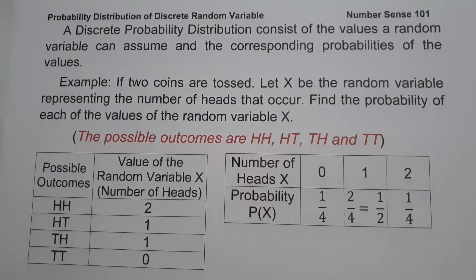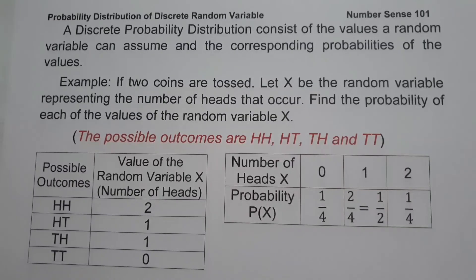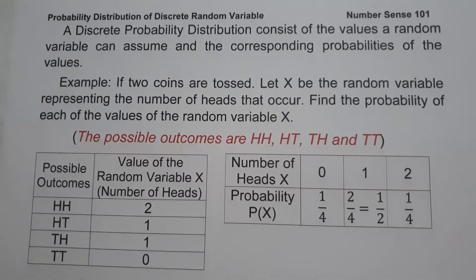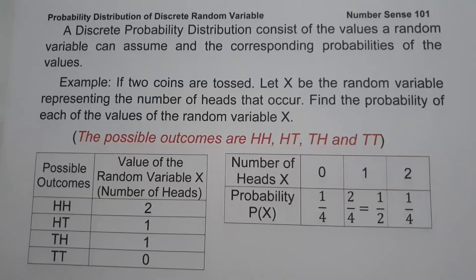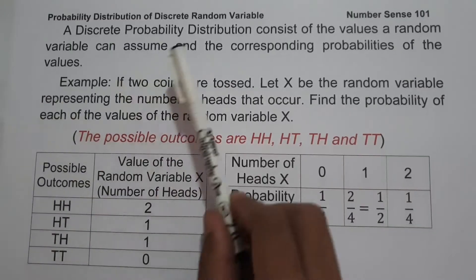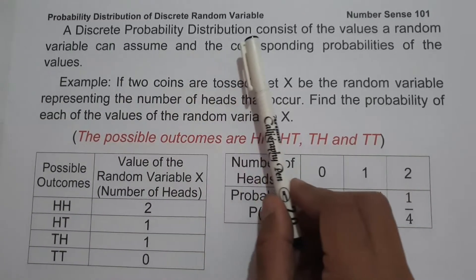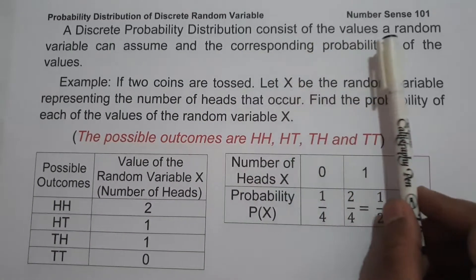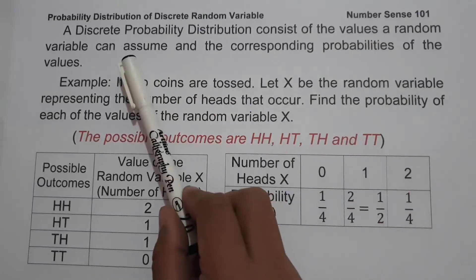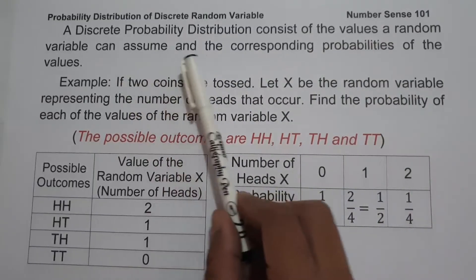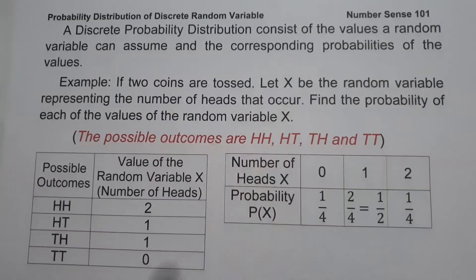For today's video, let us talk about what is probability distribution of a discrete random variable and we are going to explain everything in detail. So when we say discrete probability distribution, it consists of the values a random variable can assume and the corresponding probabilities of the values.